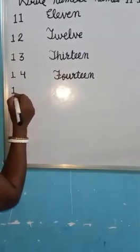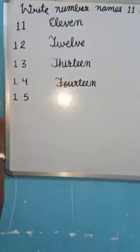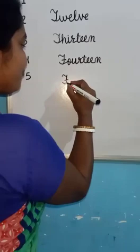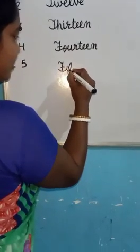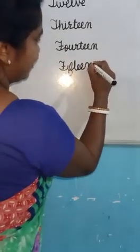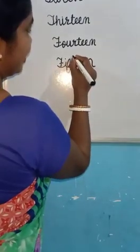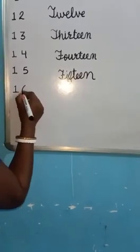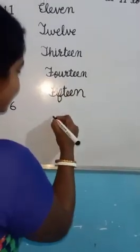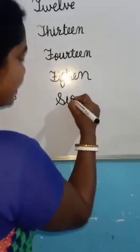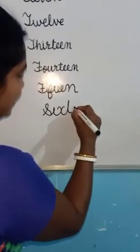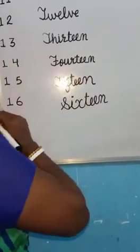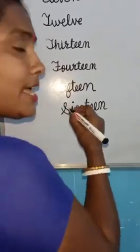Next 1-5, 15. Spelling of 15 is F-I-F-T-E-E-N, 15. Next 16, 1-6, 16. S-I-X-T-E-E-N, 16.